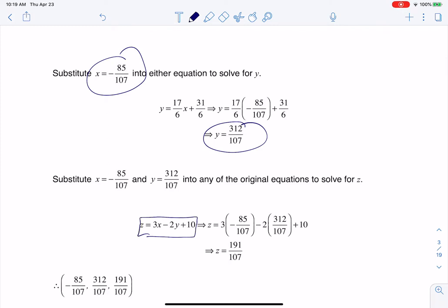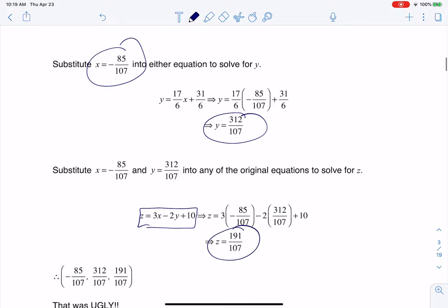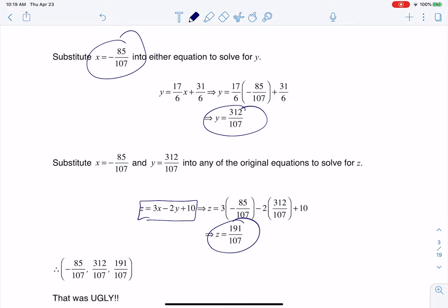When I got to my z value, it's also pretty ugly, right? 191 over 107. So there is my ordered triple, believe it or not. It's a really ugly problem. It's got ugly solutions.